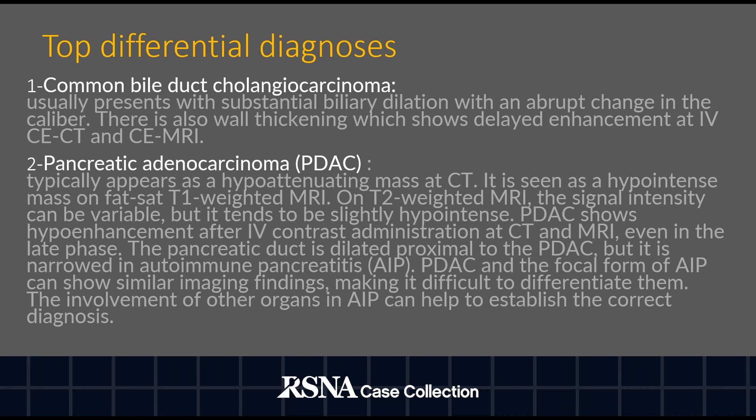Pancreatic adenocarcinoma typically appears as a hypoattenuating mass at CT. It is seen as a hypointense mass on FATSAT T1-weighted image. On T2-weighted image, the signal intensity can be variable, but it tends to be slightly hypointense. Pancreatic adenocarcinoma shows hypo-enhancement after IV contrast administration at CT and MRI, even in the late phase.